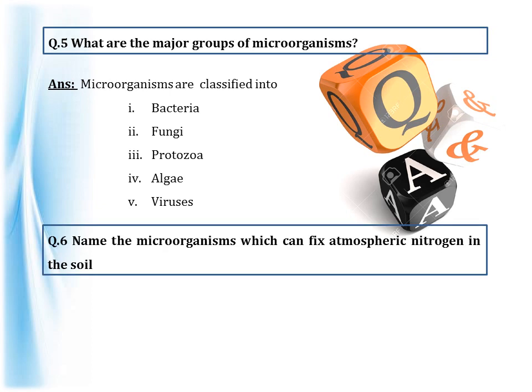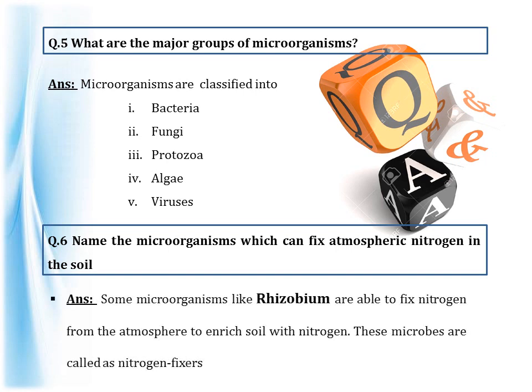Name the microorganisms which can fix atmospheric nitrogen in the soil. Some microorganisms like rhizobium, a bacteria, are able to fix nitrogen from the atmosphere to enrich the soil with nitrogen. These microbes are called nitrogen fixers. There are also other nitrogen fixers such as blue-green algae or cyanobacteria, which do not require a plant host. They have a pigment called chlorophyll and make their own food by photosynthesis.